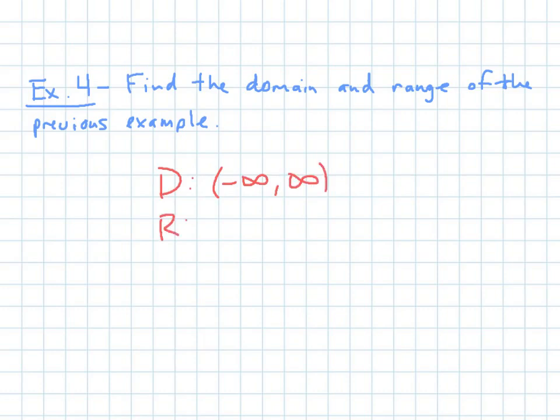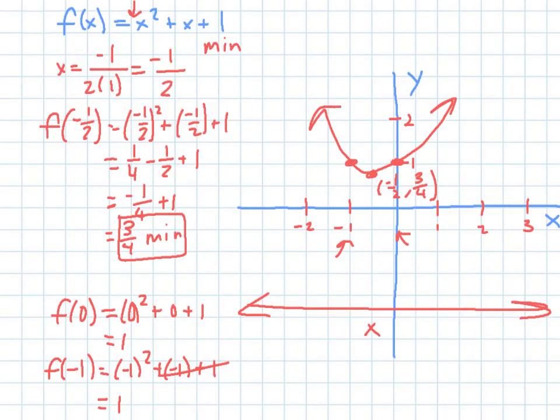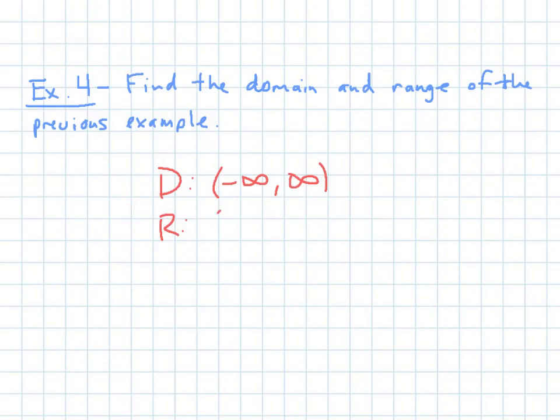And if I go back to the range, it looks like the lowest value is going to be that 3 fourths. But I can get anything that's higher than 3 fourths, but I can't go anywhere lower than that. So my range would be 3 fourths, and I would put not a parenthesis there, but a bracket, because I'm including 3 fourths. But then I go to infinity with a parenthesis.